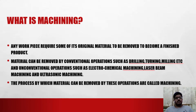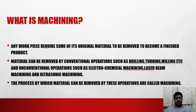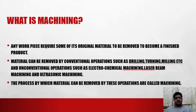With metals, material can be removed by conventional operations like drilling, turning, and milling on a lathe. And unconventional operations such as electrochemical machining, laser beam machining, or ultrasonic machining, etc. The process by which material is removed by these operations — drilling, turning, etc. — is called machining.